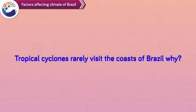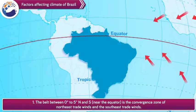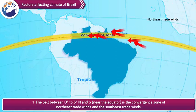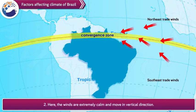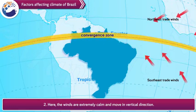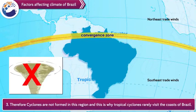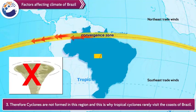Reason 1: The belt between 0 degrees to 5 degrees north and south near the equator is the convergence zone of northeast trade winds and the southeast trade winds. Reason 2: Here, the winds are extremely calm and move in a vertical direction. Reason 3: Therefore, cyclones are not formed in this region, and this is why tropical cyclones rarely visit the coasts of Brazil.